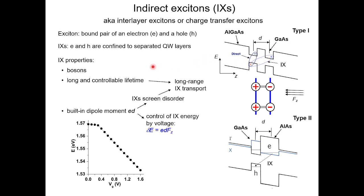This has several advantages. First of all, all excitons — direct or indirect — are bosons, so they obey Bose-Einstein statistics rather than Fermi-Dirac statistics. This means you can have more than one of them in the same place at the same time, as opposed to electrons by themselves where you can only have one. There's some trickery involved in creating composite bosons, but they behave according to Bose-Einstein statistics rather than Fermi-Dirac statistics, and this is important.